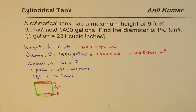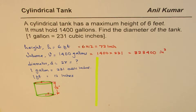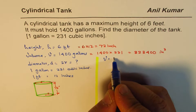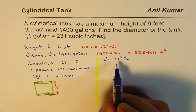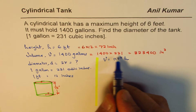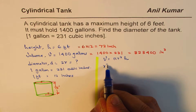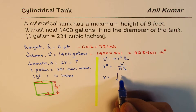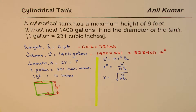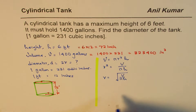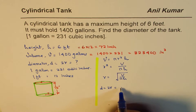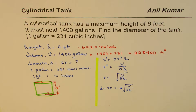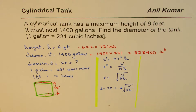The formula for the volume of a cylinder is V equals π r squared times h. We need to find the radius, and twice the radius will give the diameter. Isolating r, we get r squared equals V divided by πh, so r equals the square root of V over πh. Therefore, the diameter equals 2 times the square root of V divided by πh.